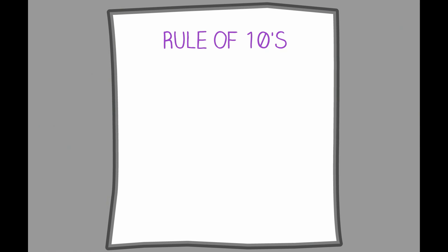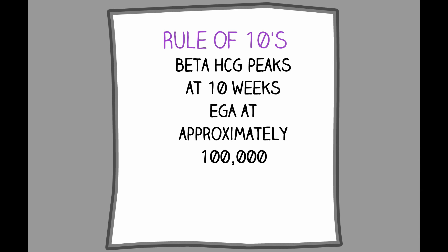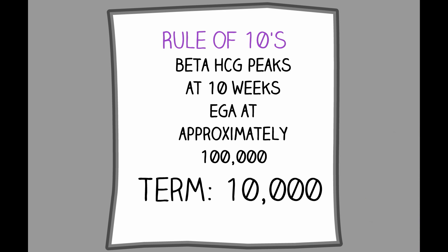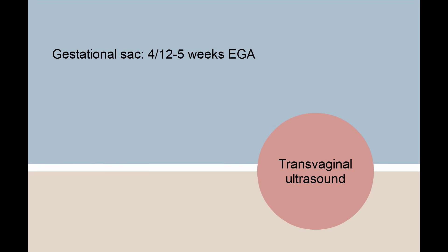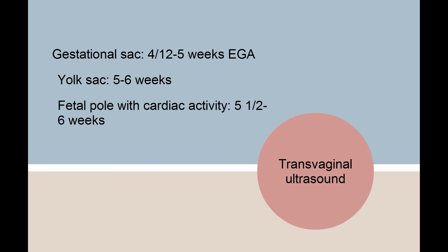The rule of 10s is a simple way of remembering some important beta-HCG landmarks. The beta-HCG peaks at approximately 10 weeks estimated gestational age at approximately 100,000. It then decreases, and at term it is about 10,000. On transvaginal ultrasound, a gestational sac can usually be identified around 4.5 to 5 weeks estimated gestational age, a yolk sac between 5 and 6 weeks, and a fetal pole with cardiac activity between 5.5 to 6 weeks.